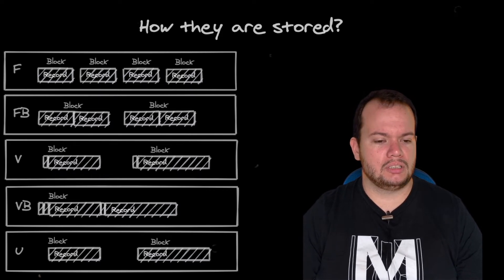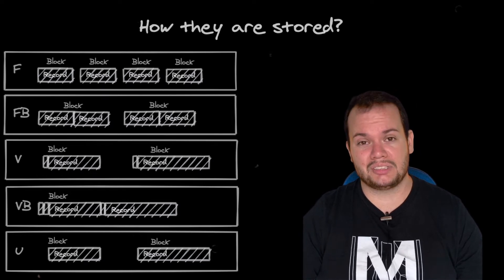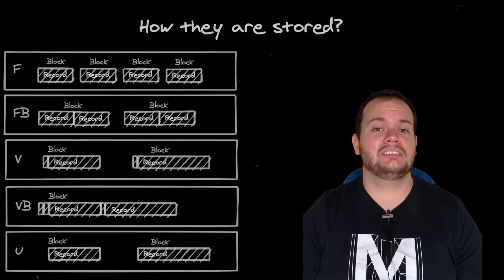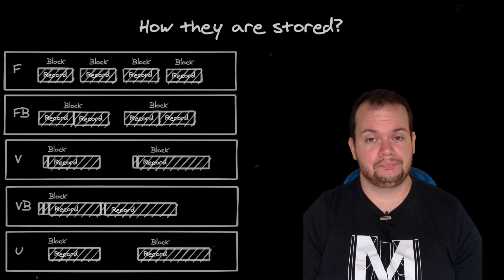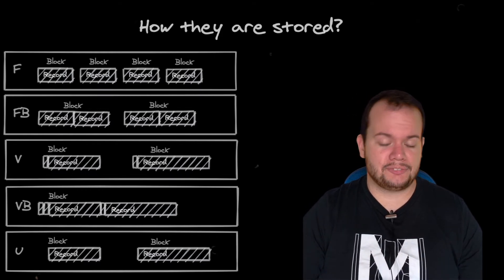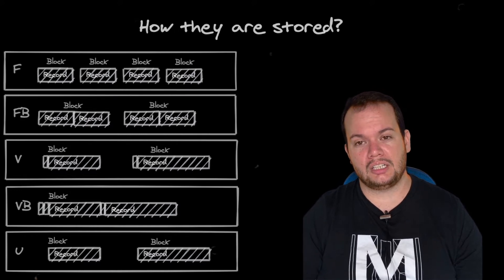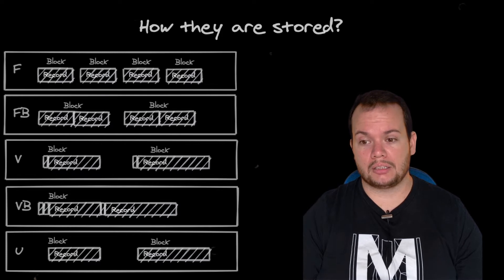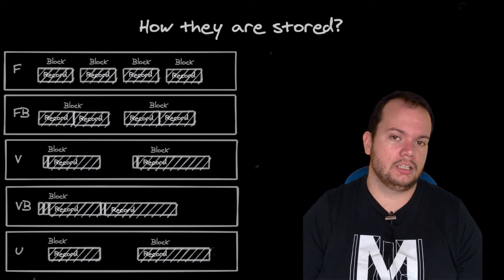To get more efficiency from this, you may want to use fixed block format. That means you have a block that contains more records with the same size. When you want to access this data, the system goes to the disk, takes this block into memory, and you have multiple records inside it. The next one, variable format, has one record per block but with variable length. You need a first word to tell the system the size of this record and the size of the block. And on variable block format, you have another word as a descriptor for the whole block, and for each record another word telling its size.